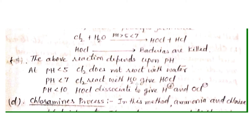Regarding pH ranges: if the pH of water is less than five, chlorine does not react with water. If the pH is between five and seven, chlorine reacts with water to give hypochlorous acid. If the pH is between seven and ten, HOCl dissociates to give H⁺ and OCl⁻ ions. So the perfect pH range for producing nascent oxygen and effective disinfection is five to seven.